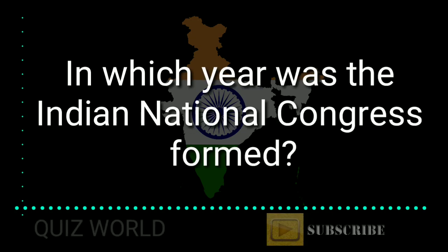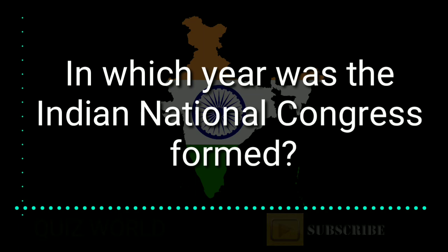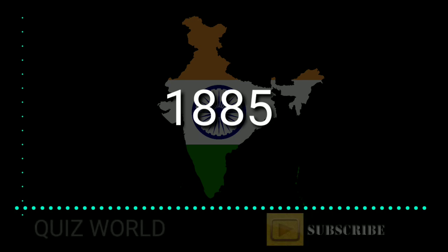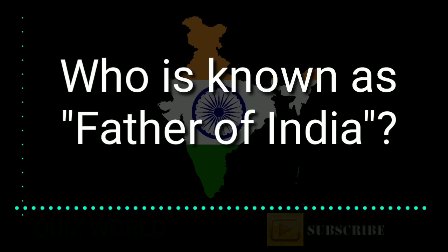In which year was the Indian National Congress formed? Answer is 1885.